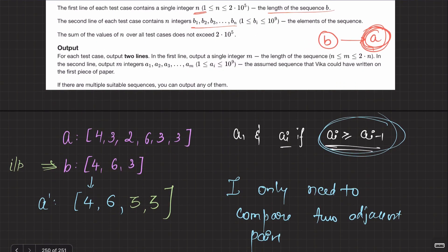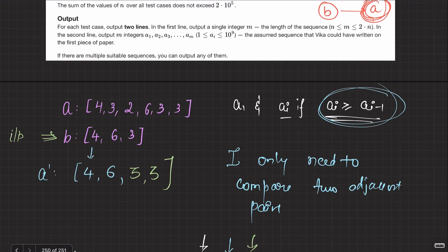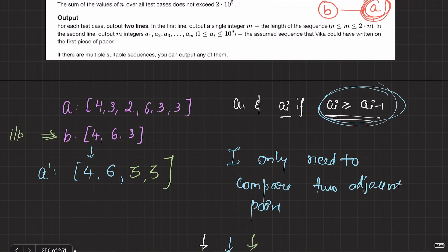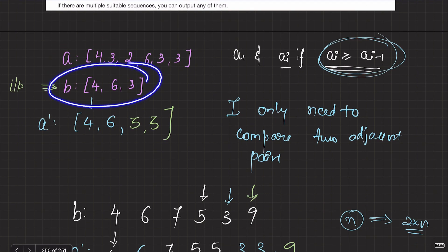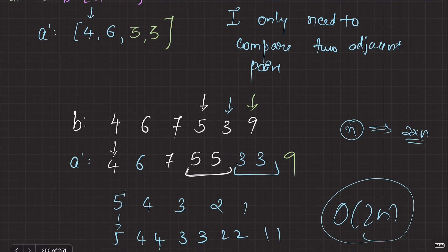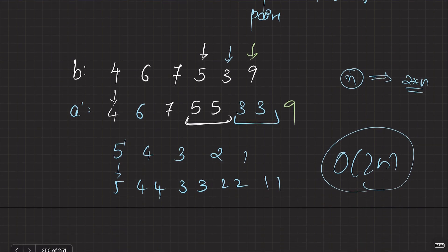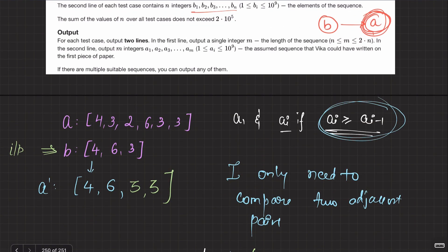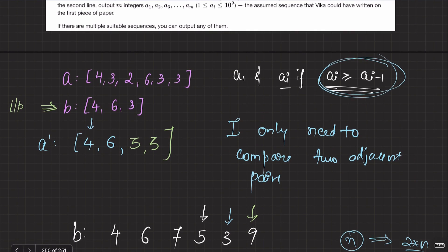That's actually the solution. The proof is straightforward: from B, I'm trying to build A. The first element is the same, and just by comparing adjacent pairs we're able to build up this solution. This is the beauty of constructive algorithms. Let's code it up so that you can completely internalize this solution.